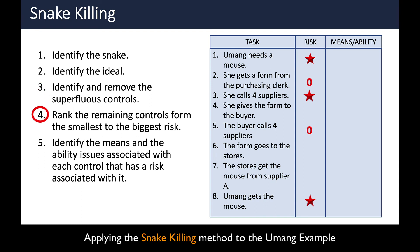The remaining controls that have risk associated with them: the first would be the form going to stores, since stores are currently responsible for the ordering and receiving side. The next step would include that receiving process, and finally the last step to remove would be the buyer, because we're assuming the buyer is operating under fundamental purchasing policy — so we would have to ensure that Umang has that knowledge before allowing her to purchase independently.